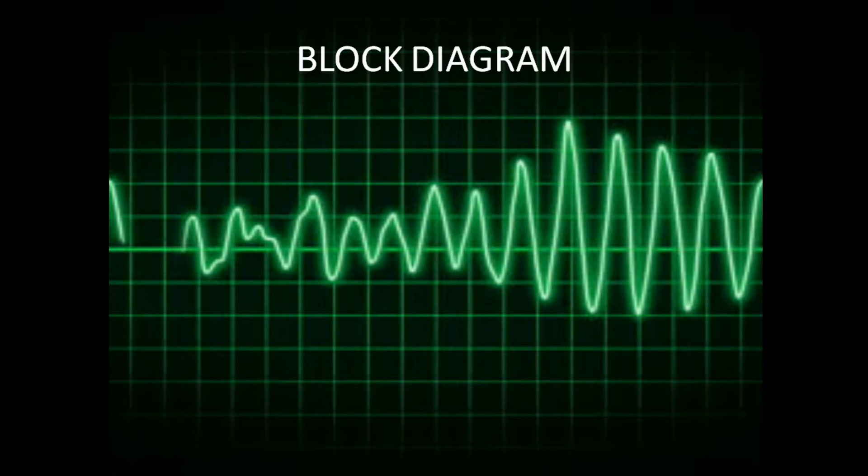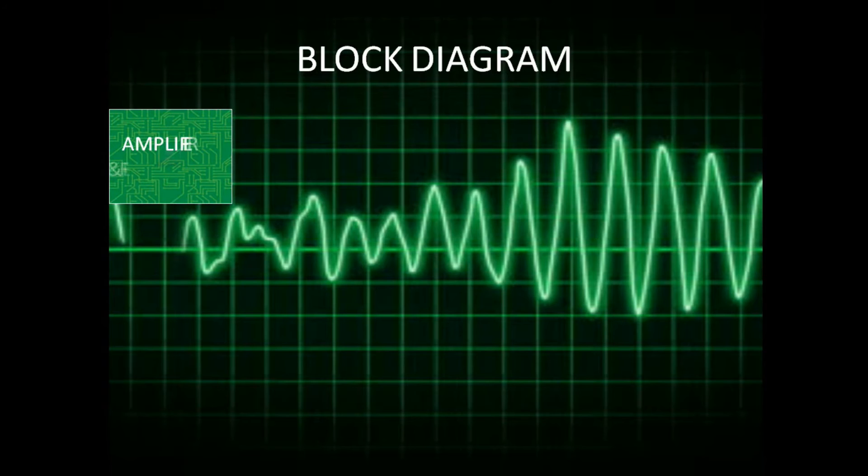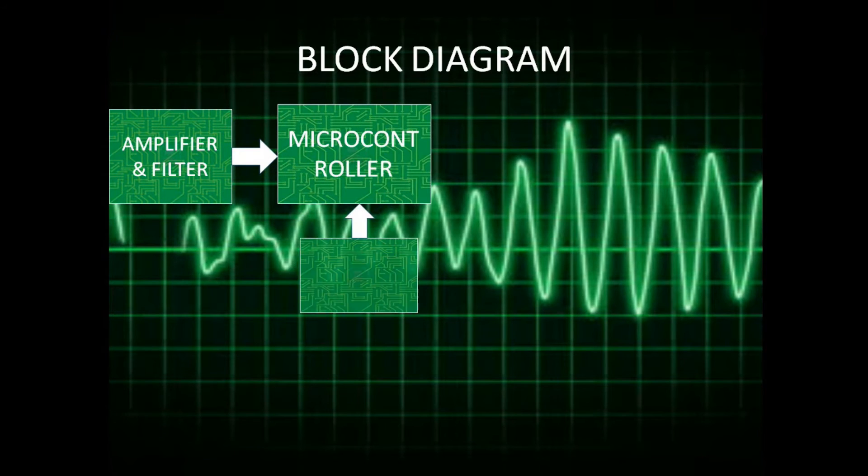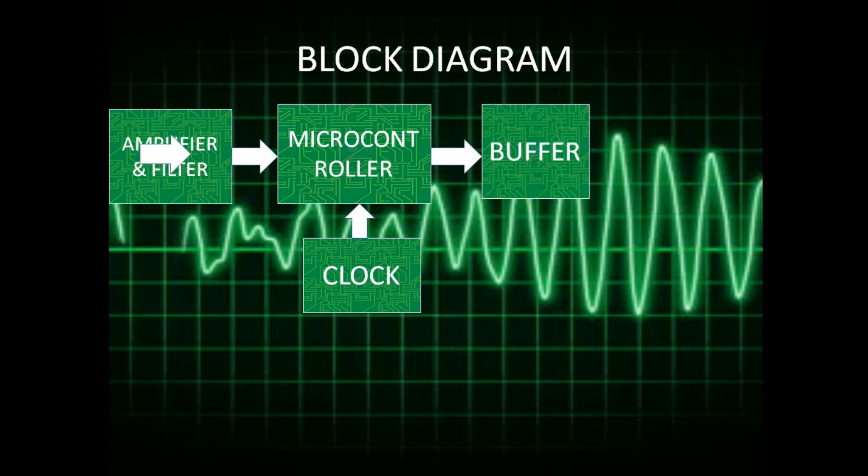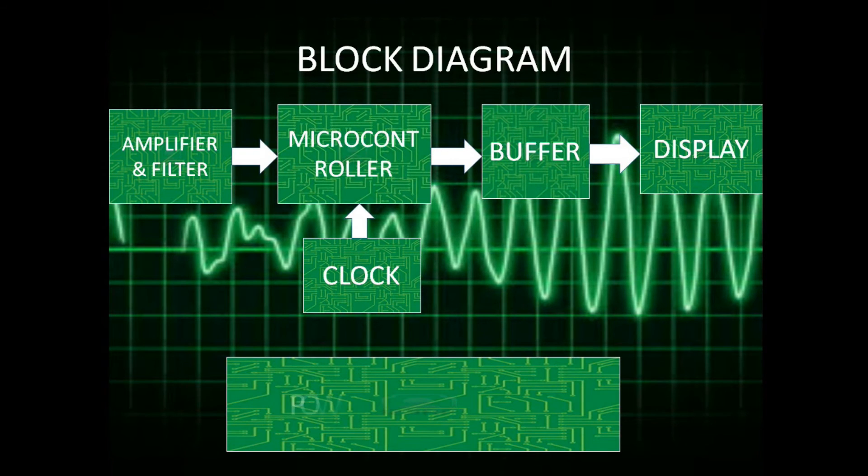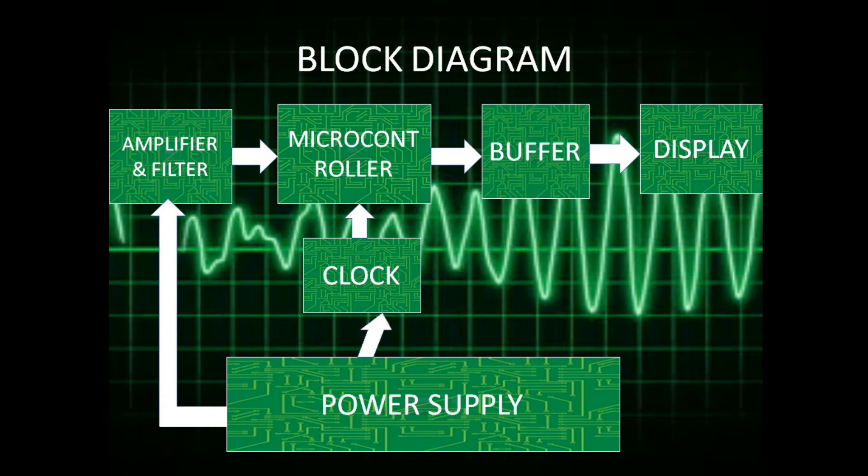Now, it is time to look at the big picture, that is the block diagram. First, an amplifier with a filter is connected to a microcontroller, which also has a clock. Then, the microcontroller is connected to a buffer, which is finally connected to a display. Each block is connected to the power supply.